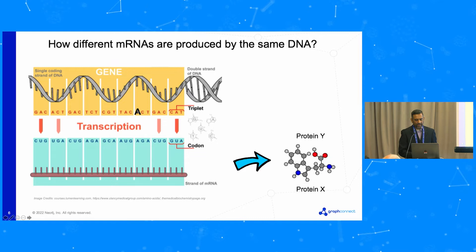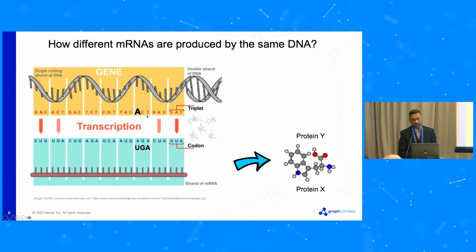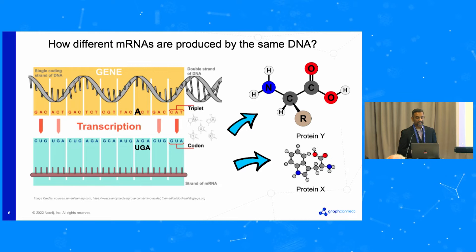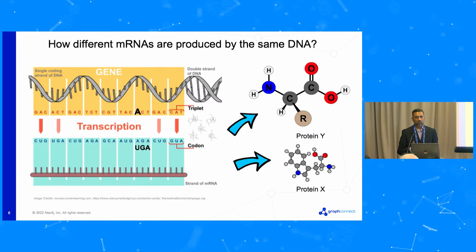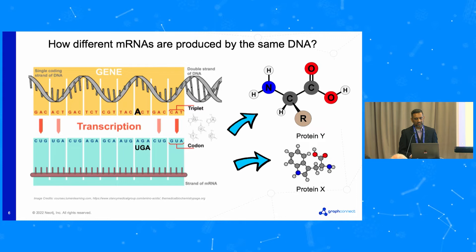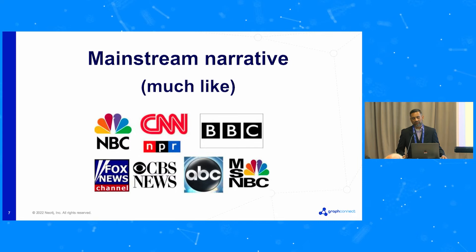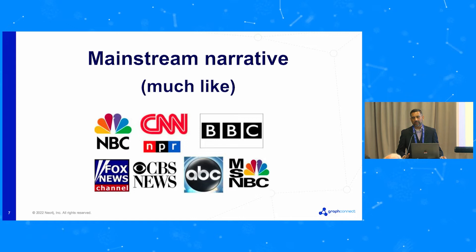If we shift a letter — say from TCT to ACT — the code obtained through transcription now becomes UGA, giving rise to a completely different protein. This is how basic mRNAs are produced by the same machinery; just a change in one letter can completely change a protein. These are called point mutations. In cancer, we study these letter changes. Point mutations can produce a completely different gene expression. This is the mainstream narrative — the major narrative of molecular biology has been genetics, occupying the mainstream for nearly 40 years.